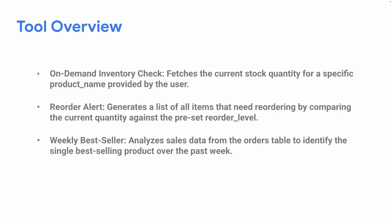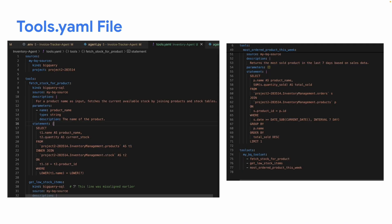The tool overview: first, an on-demand inventory check for current stock quantity of a specific item. Second, a reorder alert that compares current quantity against the preset reorder level to list items needing reordering. Third, a weekly bestseller analysis that identifies the single best-selling product from the orders table over the past week. The tools.yml file will contain these three main tools.